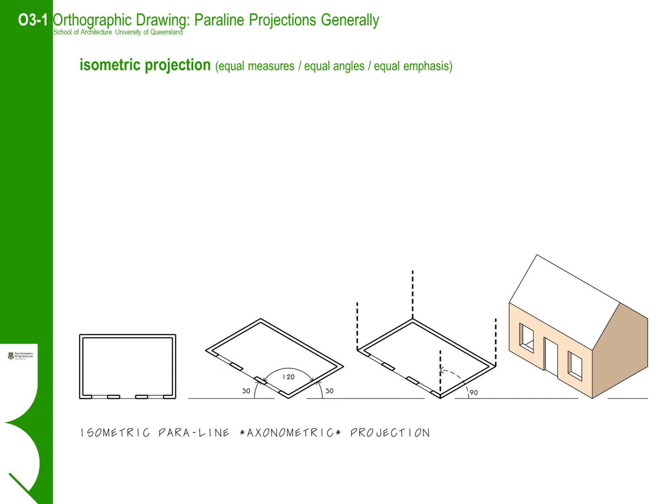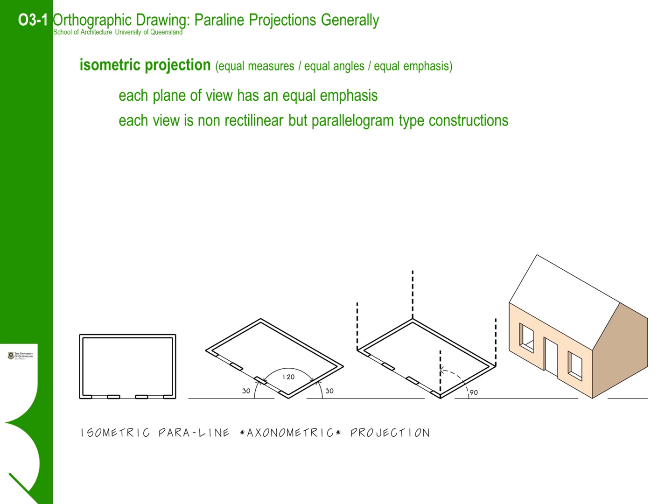Isometric views are perhaps one of the more widely used parallel view projections. The term isometric is derived from equal measures, which is a construction of the angles between the various view axes. The isometric view can be characterised by the fact that each plane of view has equal emphasis, and that each view is a construction of a rectilinear orthographic view, but it is not rectilinear — it is constructed more like a parallelogram. This is because the vanishing angles are typically 30 degrees each side of vertical, meaning that the plans are slightly squashed and will need to be redrawn. Despite this, the views are popular because they have a more natural point of view.